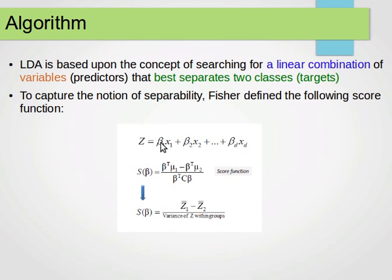These betas are coefficients that we need to find. Notice these betas can be represented as an array or a vector, and these x's can be represented as a matrix. What we do is split our data into two subsets, each one for one class. One subset for the yes, one subset for the no class. Then we find mu1 and mu2. mu1 is the mean for the first subset, mu2 is the mean for the second subset. Beta is our vector of coefficients, and c here is the covariance matrix. This is our scoring function.